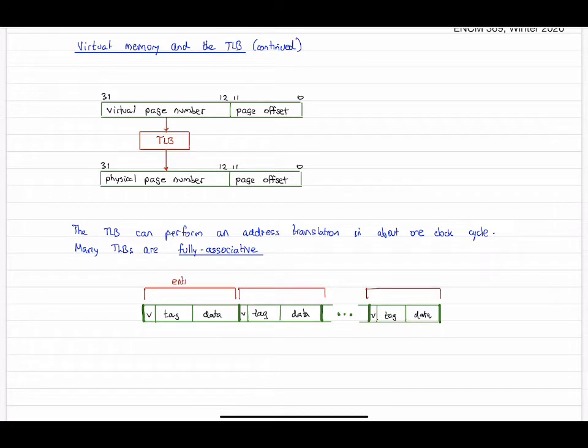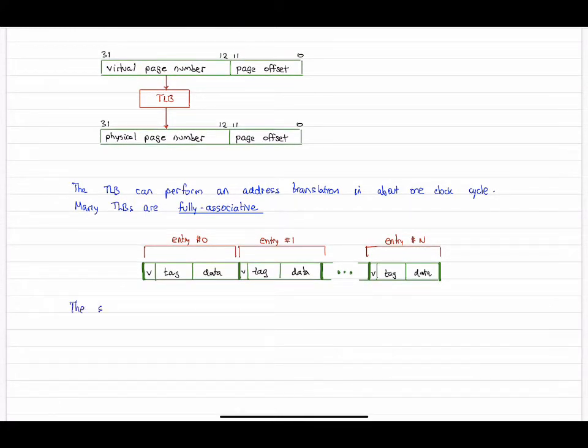So there's an example. It's just one set, a single set, with all the page table entries in place there. Speed is achieved by simultaneous hardware lookup of all entries in the TLB.